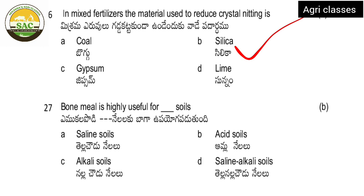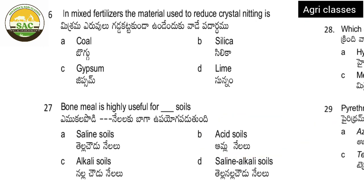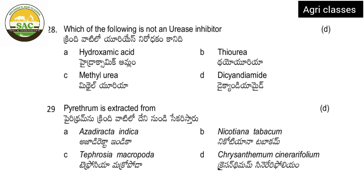Next: bone meal is highly useful for which soils? Saline soils, acid soils, alkali soils, or saline alkali soils? The correct answer is B — acid soils. Next question: which of the following is not a urease inhibitor? Examples include acetohydroxamic acid, thiourea, methyl urea. The correct answer is D — disand diamide.